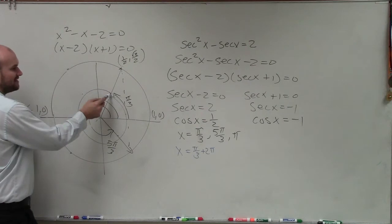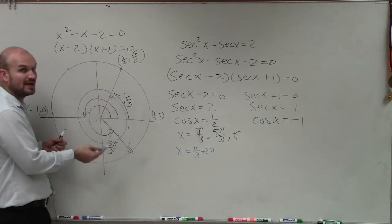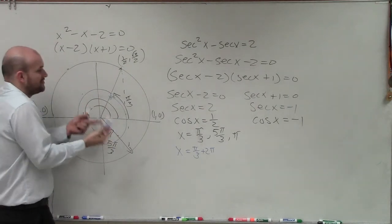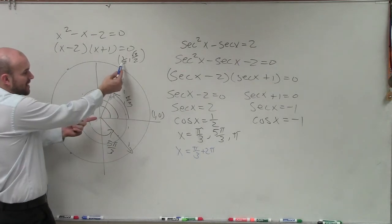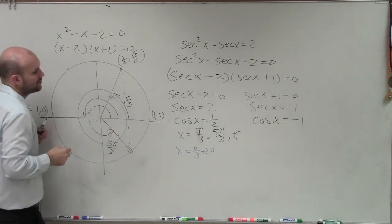So x equals pi over 3 plus 2 pi. Because we obviously know that if I add 2 pi, that's a coterminal angle. You're going to be able to evaluate it for the same amount, which is 1 half. And you can just keep on adding coterminal angles.